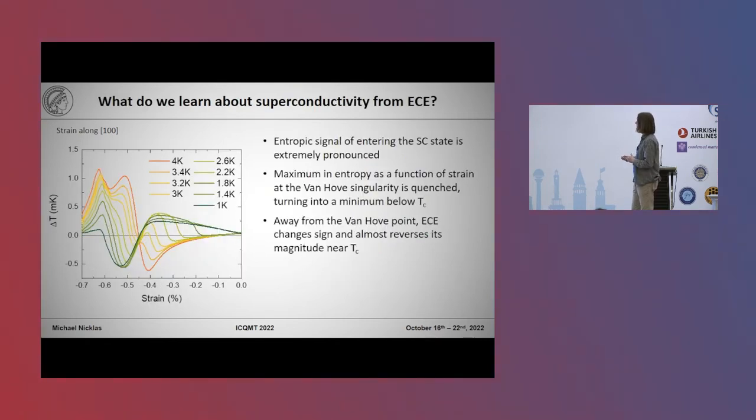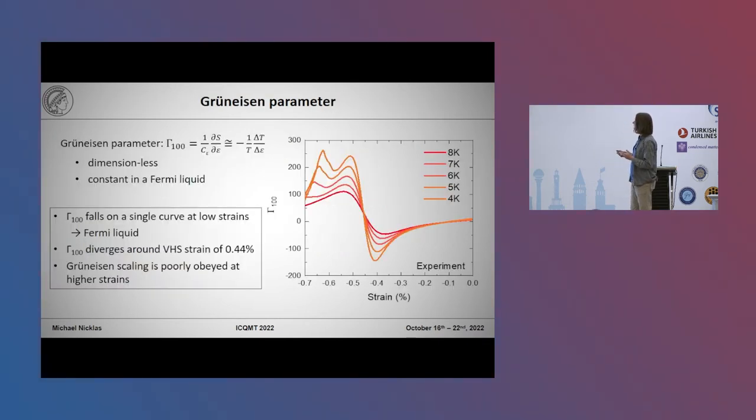So let me just summarize here the experimental facts. We have the entropic signal by entering in the superconducting state is well pronounced. We have a maximum entropy at the Van Hove singularity in the normal state which is quenched to and turning into minimum below TC. And away from the Van Hove point, basically the signal almost reverses sign. What's now important to compare this with literature: we can look at the parameter which is basically just delta T divided by delta epsilon times 1 over T.